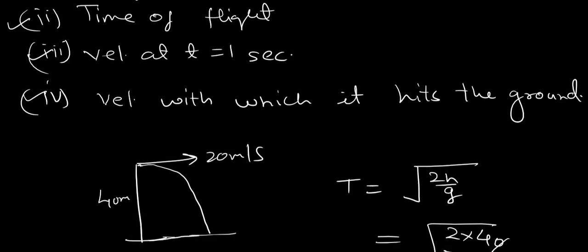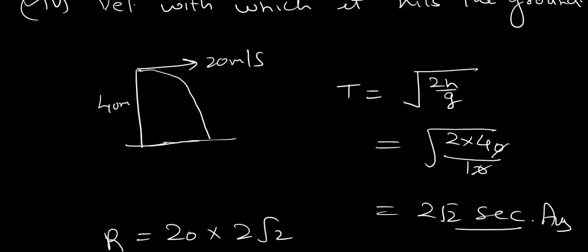Now, taking third part of the question is velocity at t equals to 1 second. So, now, I will find the velocity at t equals to 1 second. Suppose, here is t equals to 0, and here is t equals to 1 second. So, here I will find the velocity at t equals to 1 second.